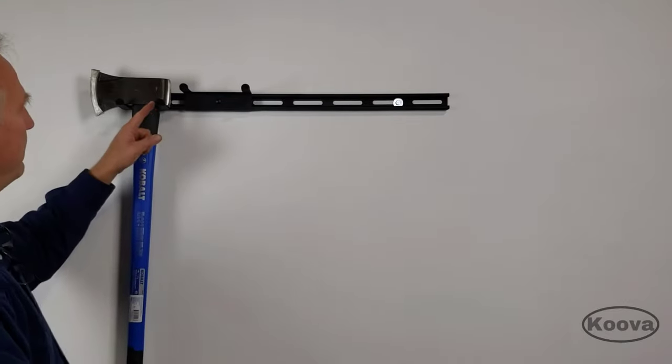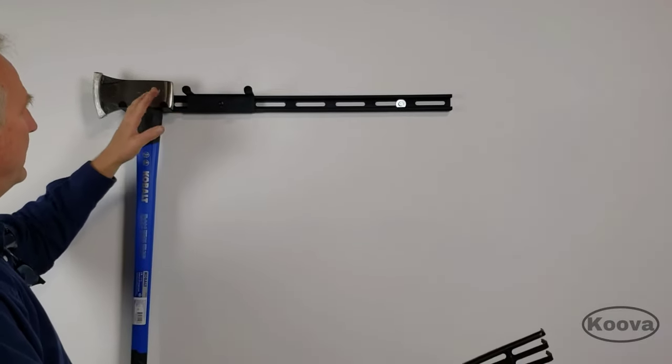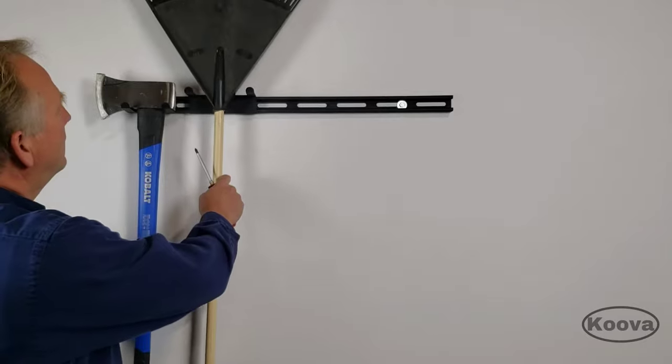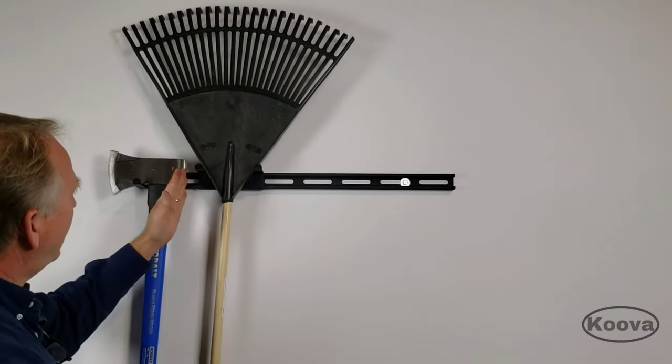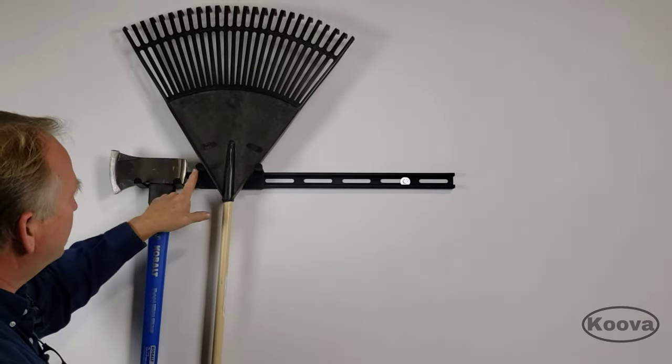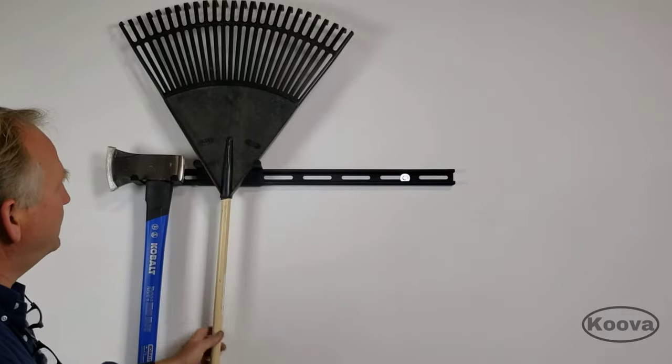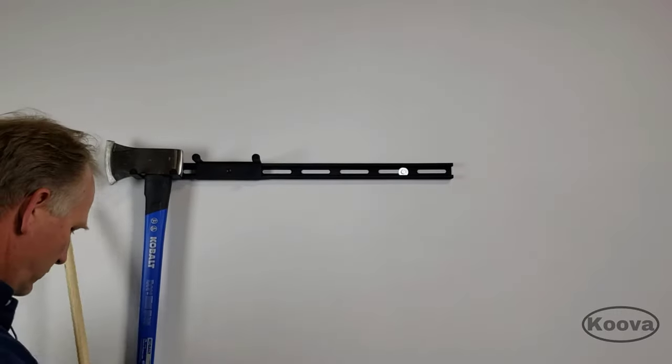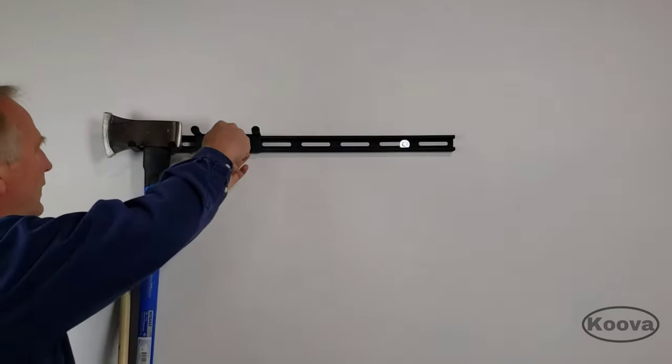The cool thing about an under bracket and an over bracket is that wide tools can be placed close by without interfering. Actually this one's too wide, so I'm going to show you how easy it is to move that bracket over exactly where you want it.